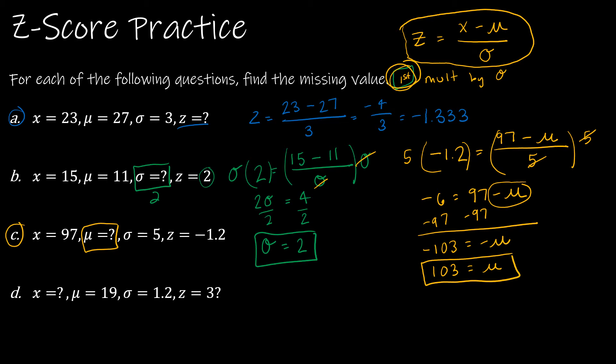For the very last one, I am looking for x. So again, using my z-score formula, z, which is 3, is equal to x minus μ, which is 19, divided by 1.2. As I've done on every question, except for a, I'm going to multiply each side times the standard deviation. That gives me 3.6 is equal to x minus 19. And add 19 to each side. And that gives me 22.6 is equal to x.